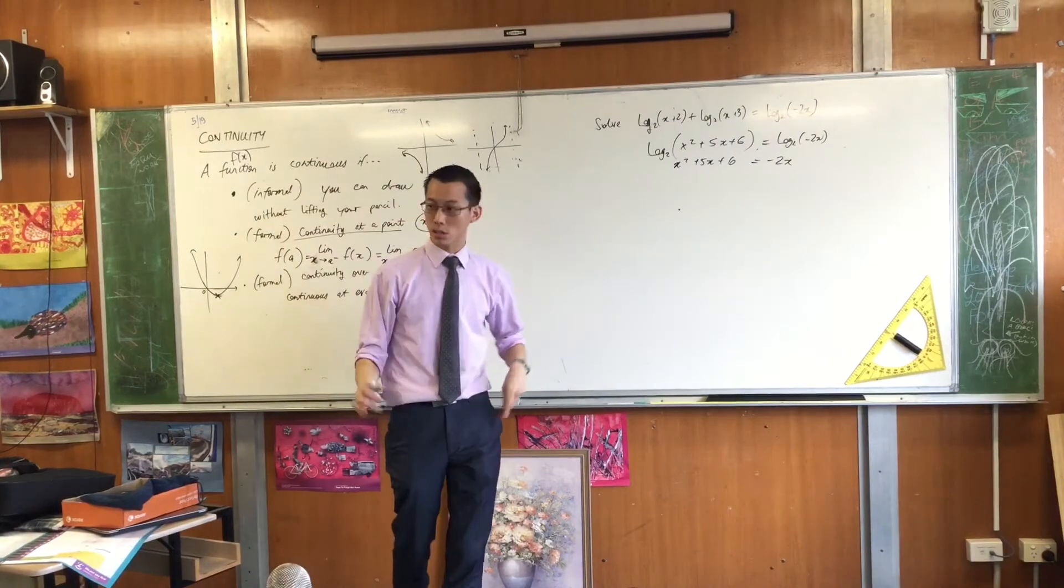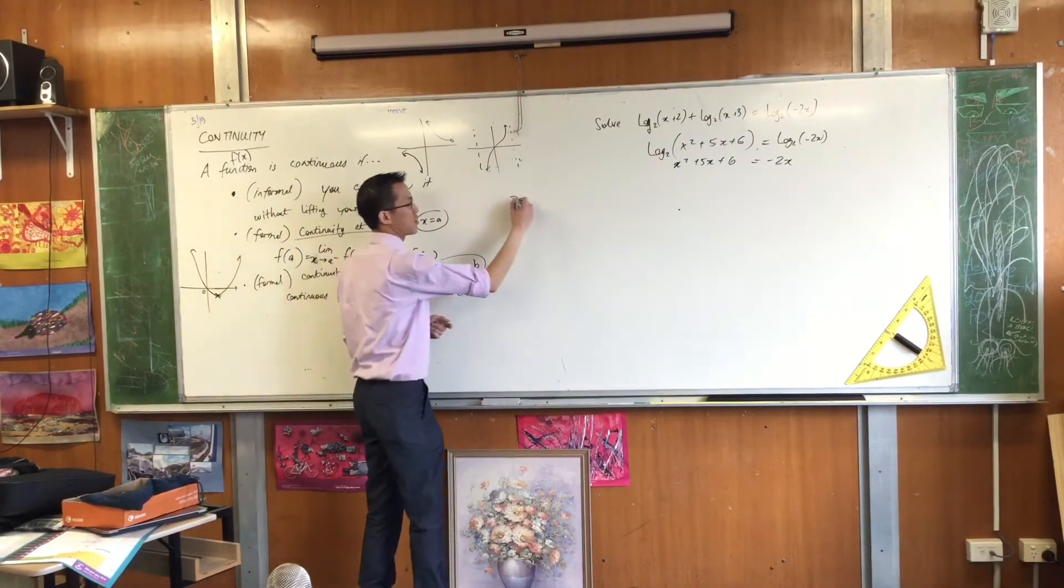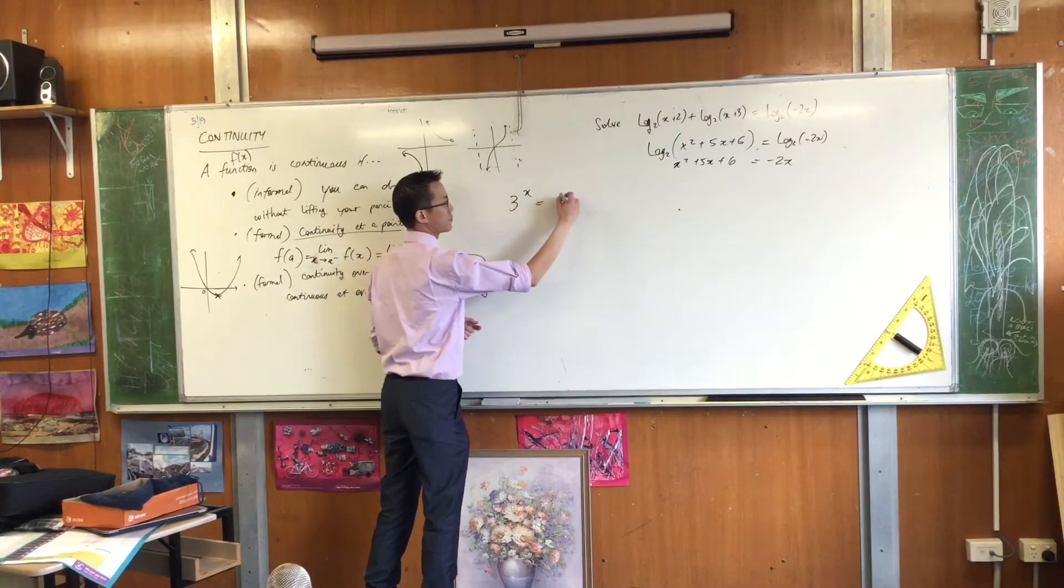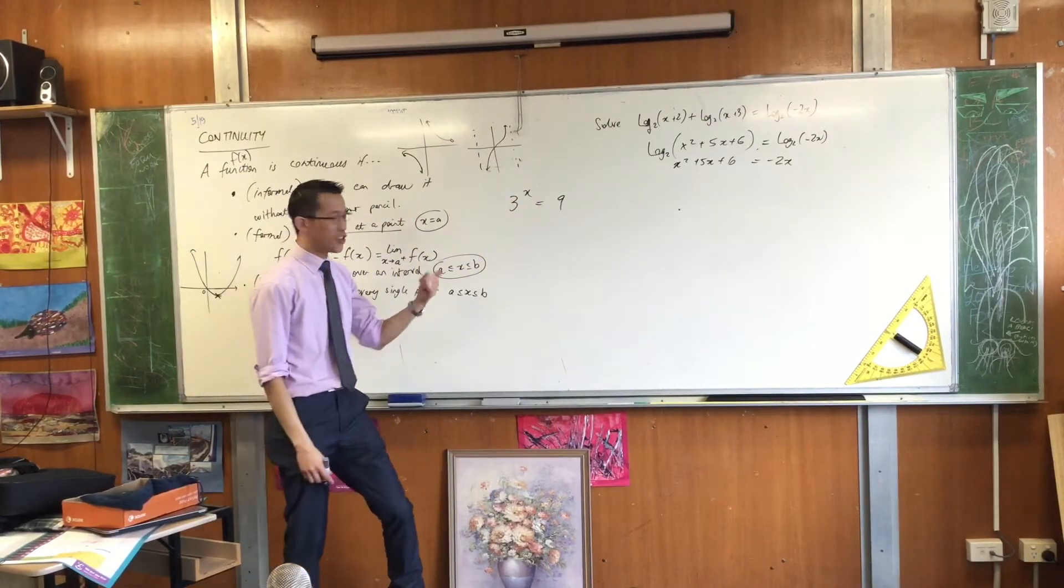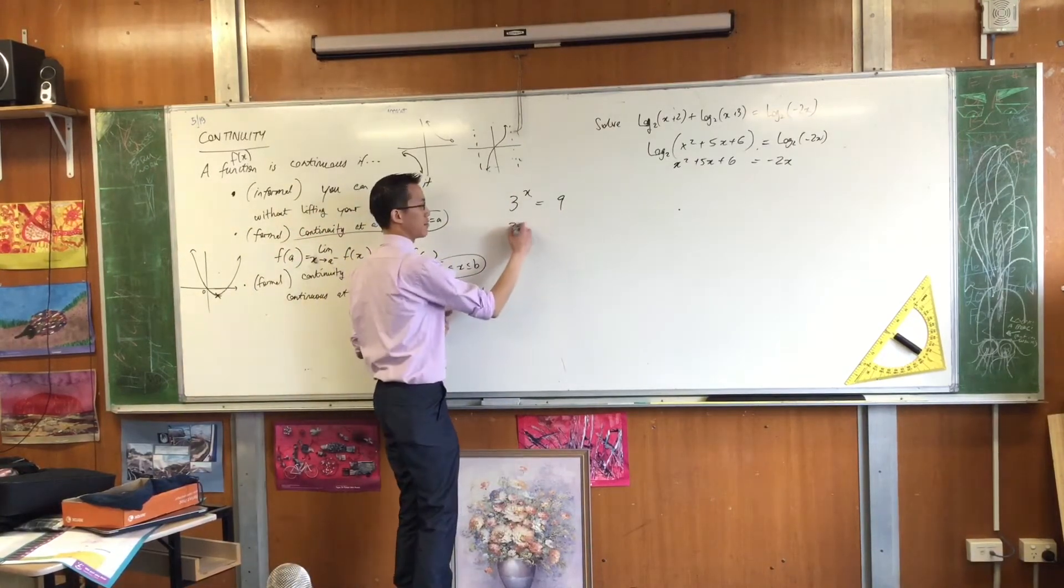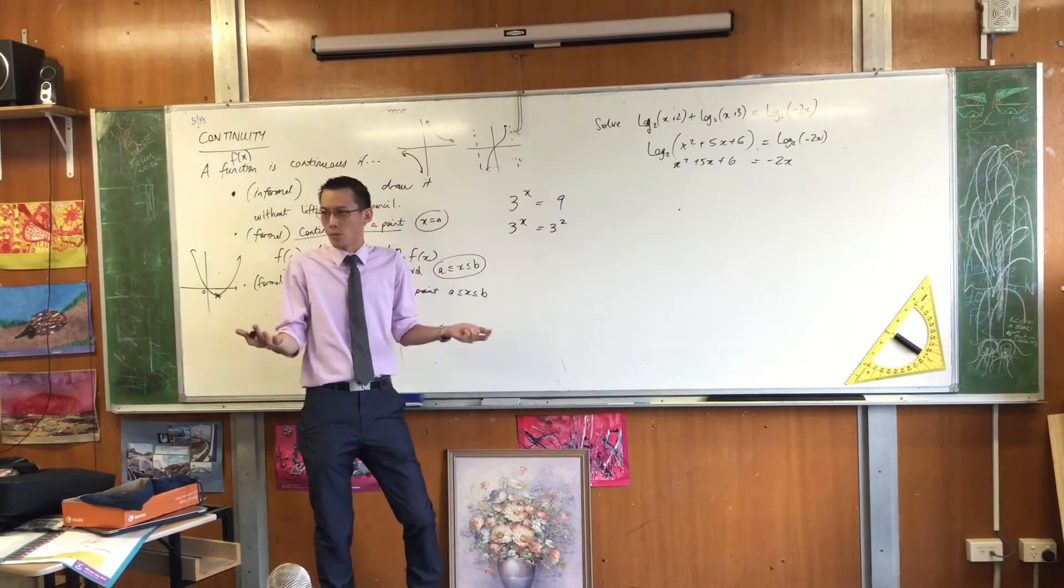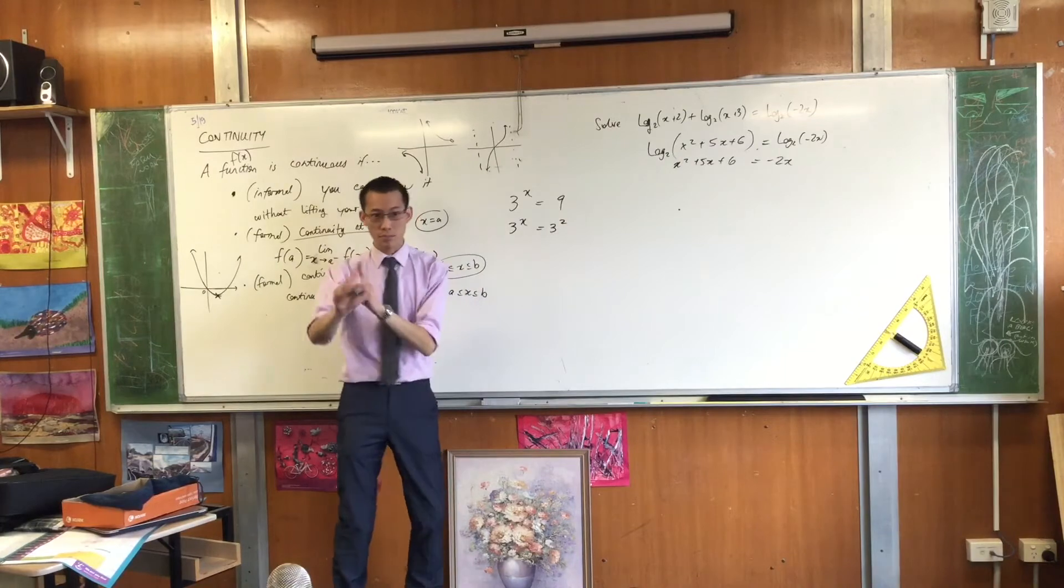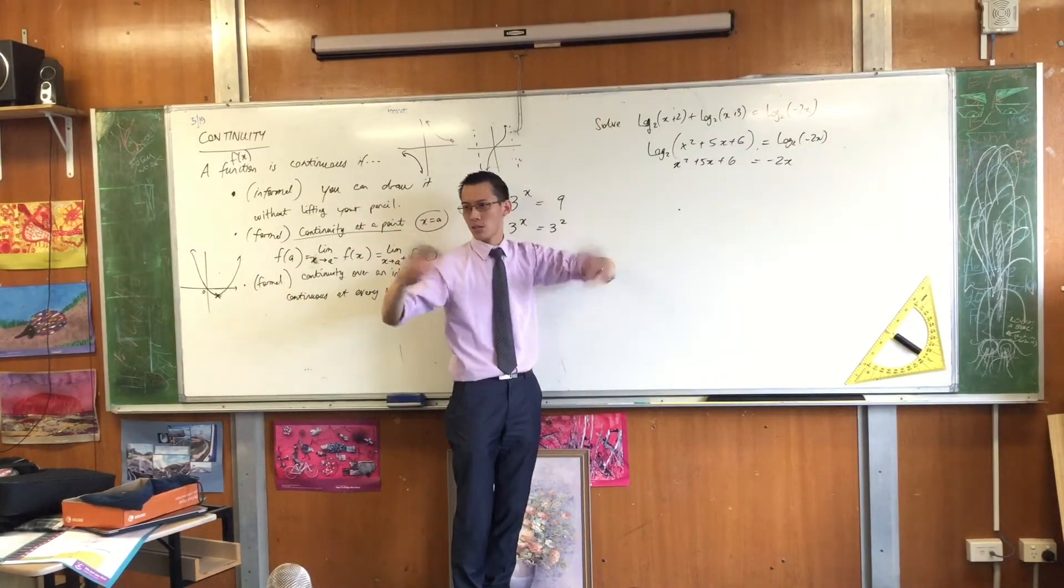So you've used your log laws to combine things, but now that you have, this is exactly the same as when you see an equation like this. In this case, you would write the right hand side with the same base as the left hand side. And having successfully done that, you're like, well I don't need the base of 3 anymore. I would just say, X equals 2. Make sense? So here, I don't need the logs anymore. Log of this, log of that, it's all the same.